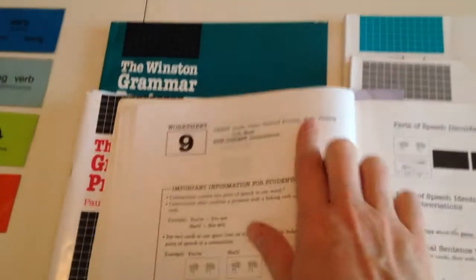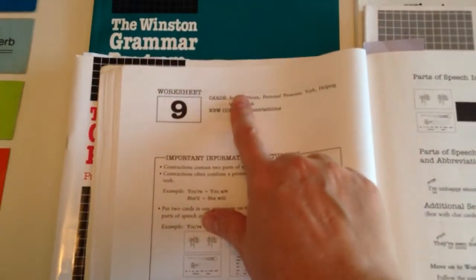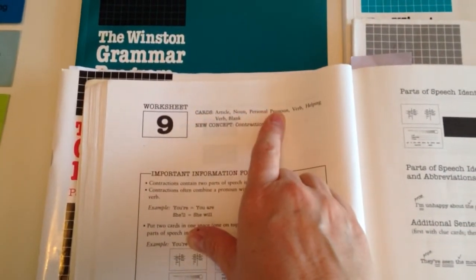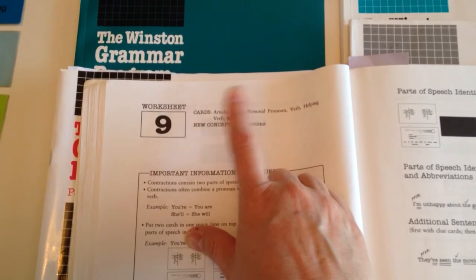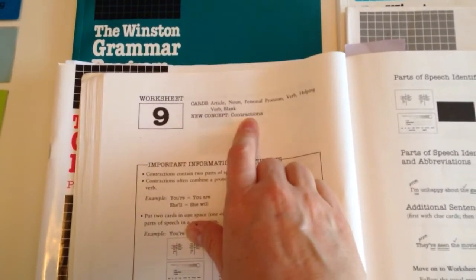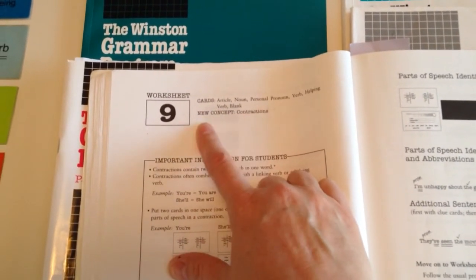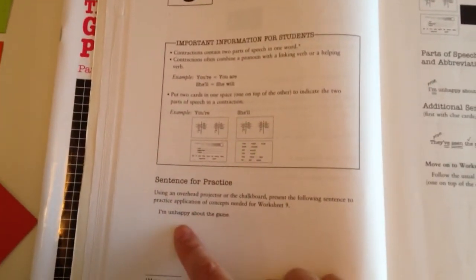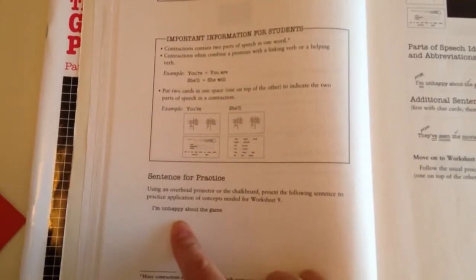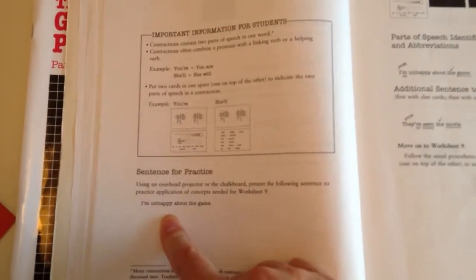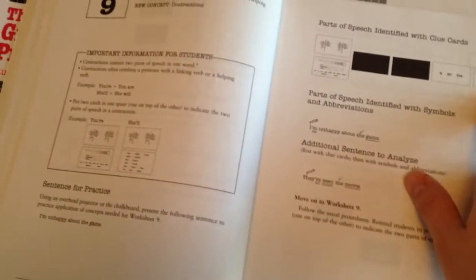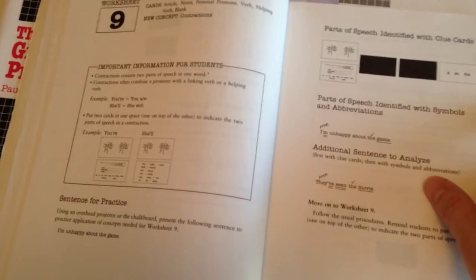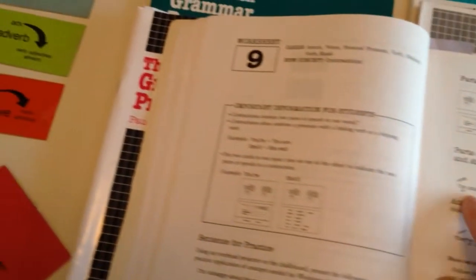First, in the teacher's book, it'll show what cards they should already have and already have learned, and then a new concept. If there's no new concept, it'll say no new concept. You read this information, then you go over practice sentences with them. This one happens to be, I'm unhappy about the game. You lay out the cards for them after a while, and then you can let them do it, and you can correct it if it's wrong.